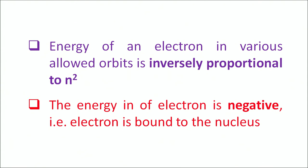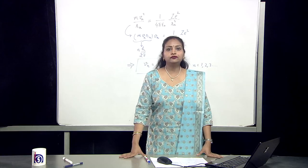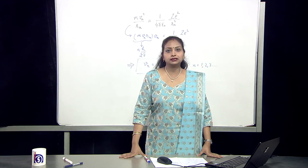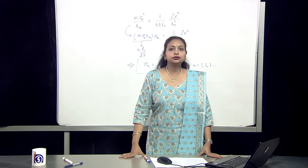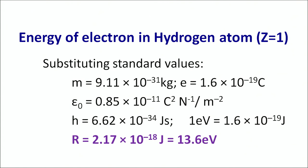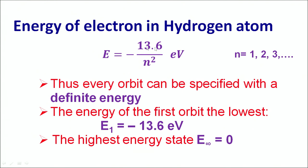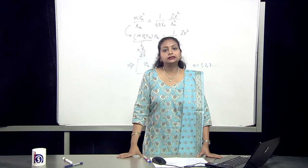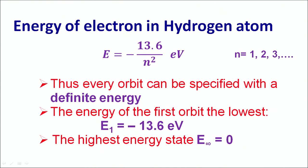The energy of the electron is negative, which means that the electron is bound to the nucleus. If we calculate the energy of electron in hydrogen atom, z = 1. Substituting the standard values, we get the Rydberg constant value as 13.6 electron volts. Hence, the energy of electron in hydrogen atom is E = −13.6 / n² electron volts. Every orbit is specified with definite energy, and the energy of the first orbit is −13.6 eV. The highest energy state has an energy of 0.